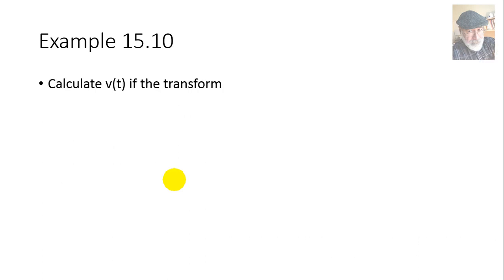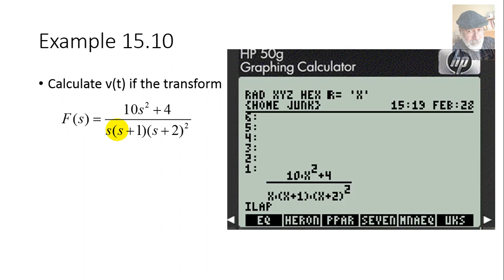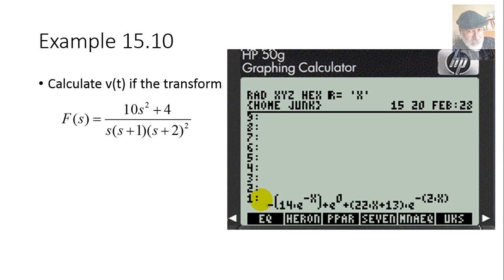Example 15.10. Calculate V(t) if the transform is given by this function of S. Same deal. Write that as a function of X. Check that X is actually the independent variable in mode CAS, clear every radio button, and ask for the ILAP, the inverse Laplace transform.